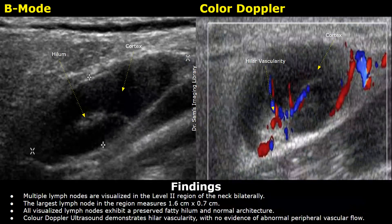This is another example of an ultrasound report of a reactive cervical lymph node. These are the findings: multiple lymph nodes are visualized in the level 2 region of the neck bilaterally. The largest lymph node in the region measures 1.6 by 0.7 centimeters. All visualized lymph nodes exhibit a preserved fatty hilum and normal architecture.